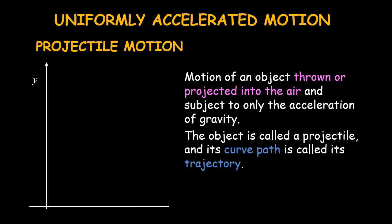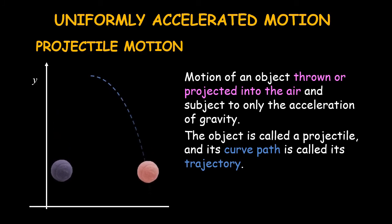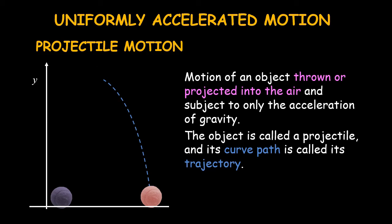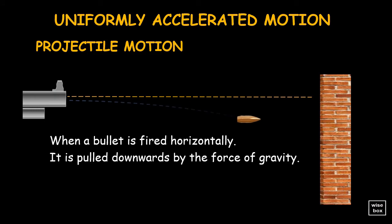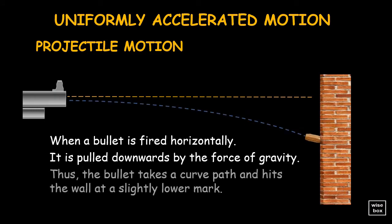Projectile motion is a motion of an object thrown or projected into the air, and subject to only the acceleration of gravity. The object is called a projectile, and its curved path is called its trajectory. When a bullet is fired horizontally, it is pulled downwards by the force of gravity. Thus the bullet takes a curved path and hits the wall at a slightly lower mark.